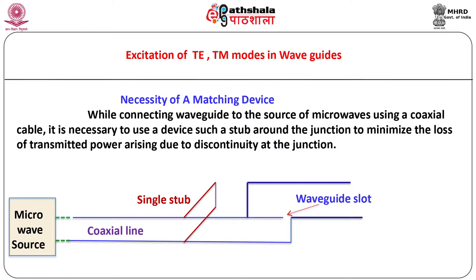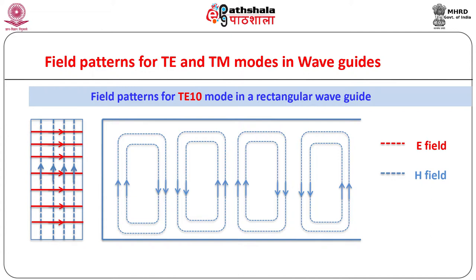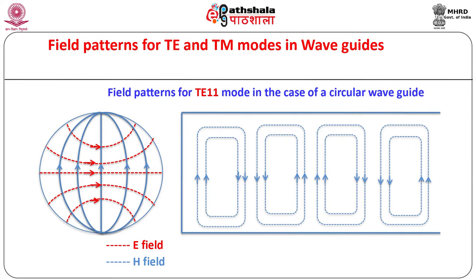One important aspect associated with electromagnetic waveguides is the patterns of E and H fields corresponding to different modes propagating through the waveguide. We can plot such patterns using the mathematical expressions for components of E and H for the desired mode. Two views — namely vertical cross-sectional and longitudinal (along the length of the waveguide) — are generally considered. For example, field patterns for the TE10 mode in a rectangular waveguide and for the TE11 mode in a circular waveguide are as shown.